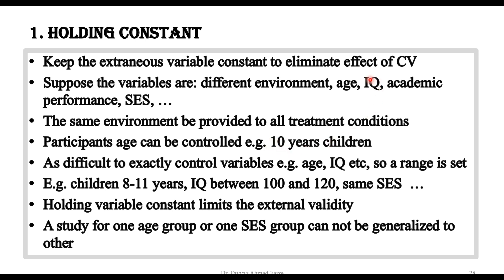Similarly, if we have IQ, academic performance, or socioeconomic status as variables, we can say that all students or participants in the study should have the same IQ level. In the same way, their socioeconomic status should be the same. This way we can minimize the effect of these variables on our study.